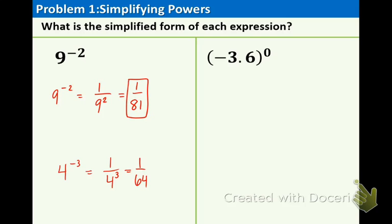On the right side, part B, we have negative 3.6 raised to the zero power. Remember, no matter what number is inside the parentheses raised to the zero power, you're going to equal 1. And that's by definition of the zero being an exponent. Here's one other example. Negative 5 to the zero, that's also going to be 1.